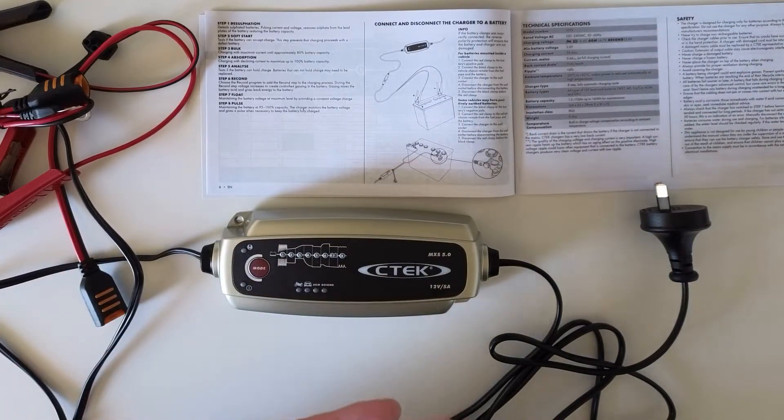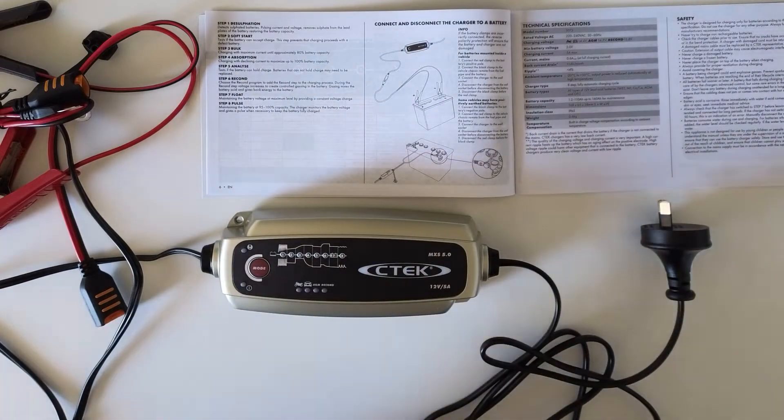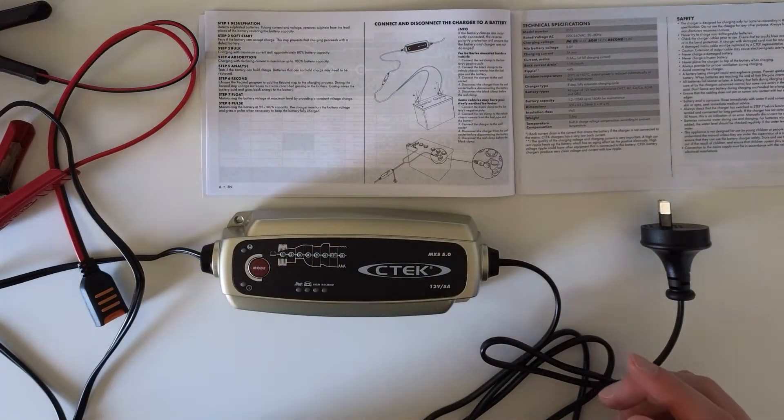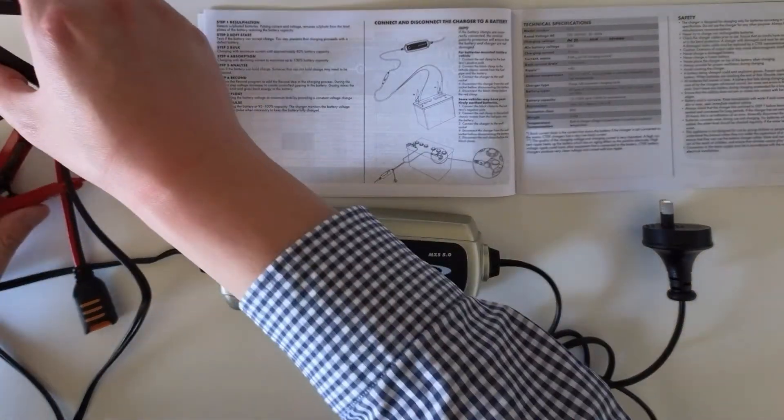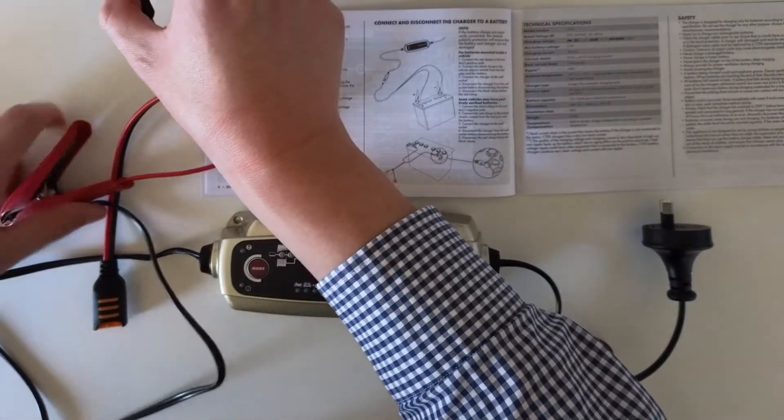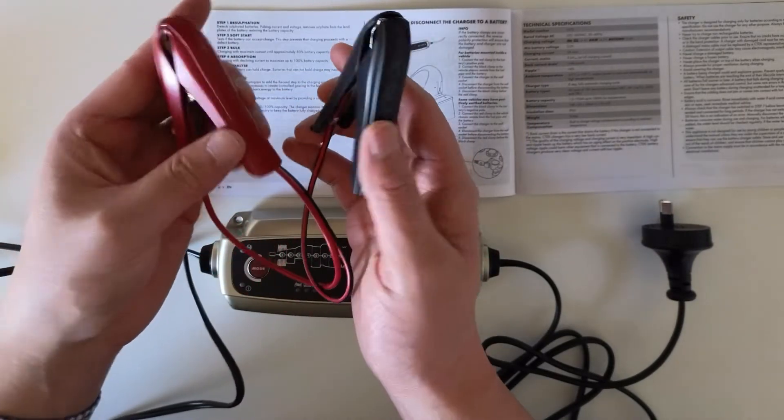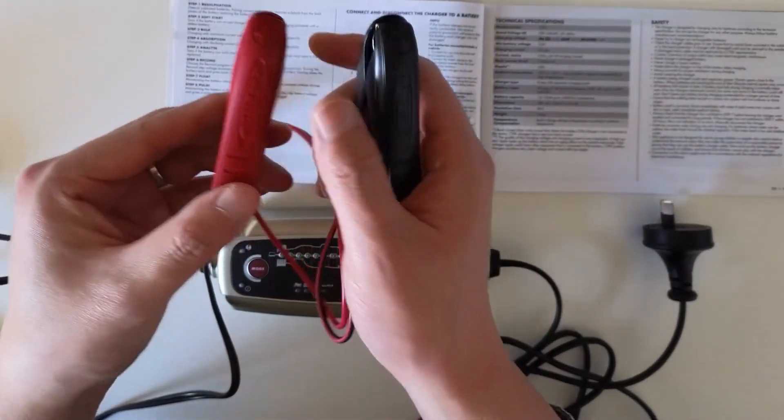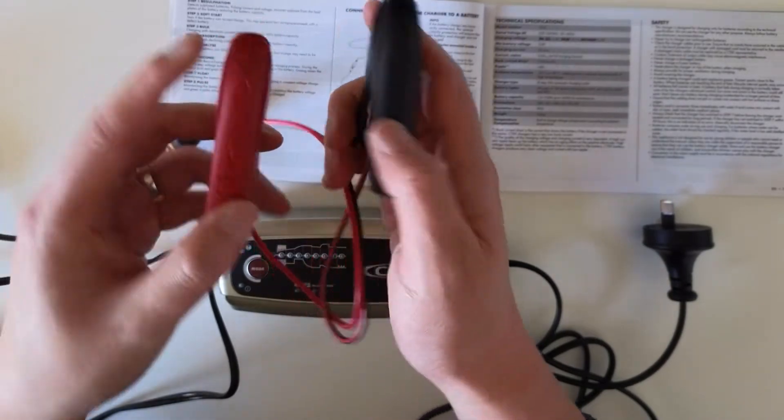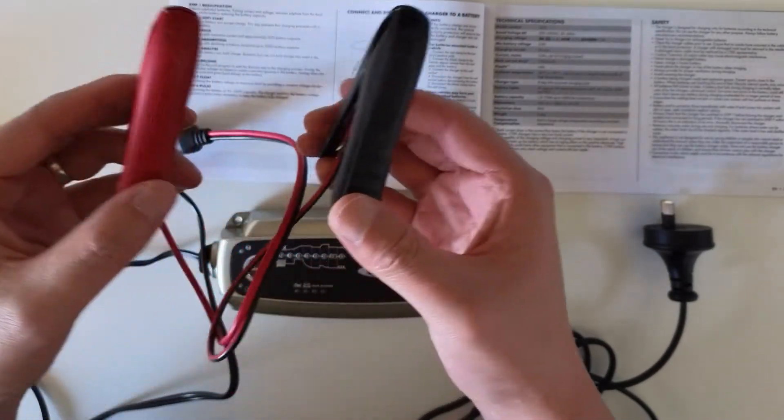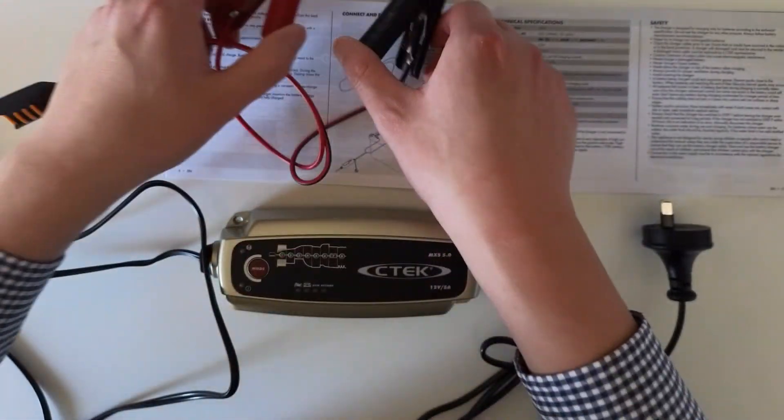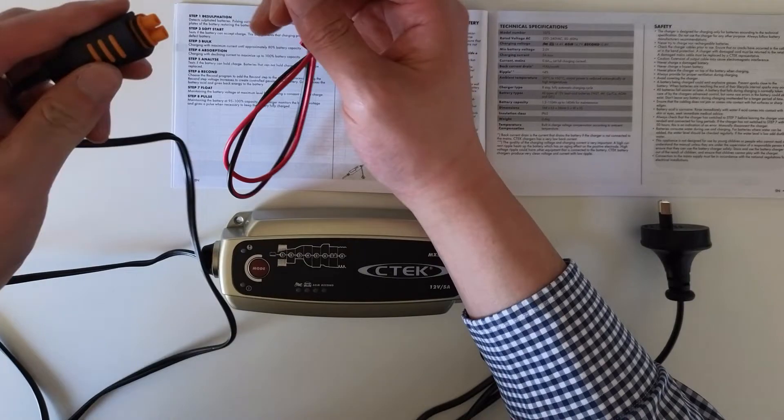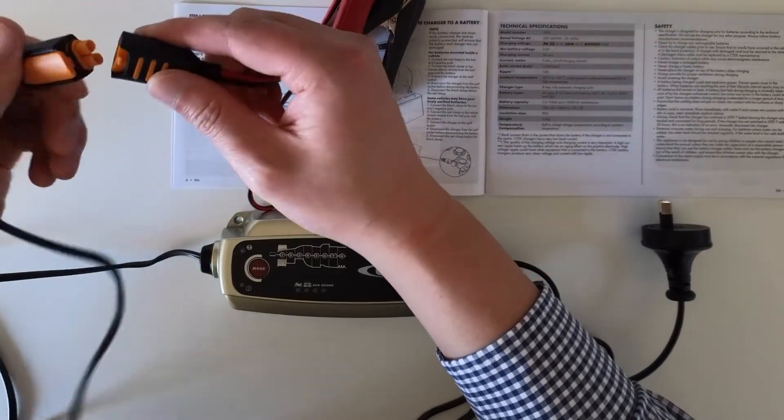Let me first introduce you guys how to use this charger. What you need to do, you first need to connect the clamps, those leads to the battery. The red is to the positive, the black is to the negative. So that's the first step. Probably you need to connect this one to the socket first.